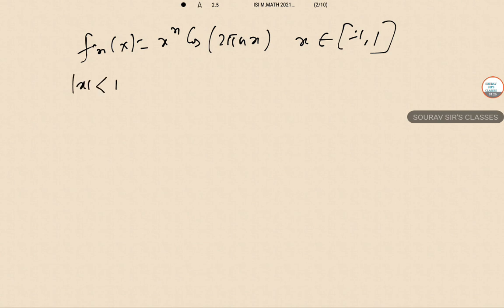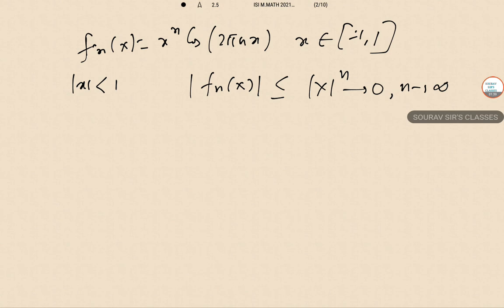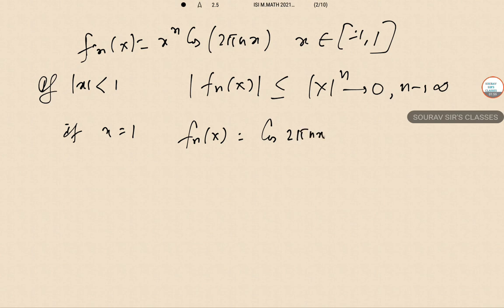Case 1: If |x| < 1, then |f_n(x)| ≤ |x|^n which tends to 0 as n tends to infinity. Case 2: If x = 1, then f_n(x) = cos(2πn · 1) = 1, which tends to 1 as n tends to infinity. Case 3: If x = -1, then f_n(-1) = (-1)^n · cos(-2πn) = (-1)^n, which does not converge.